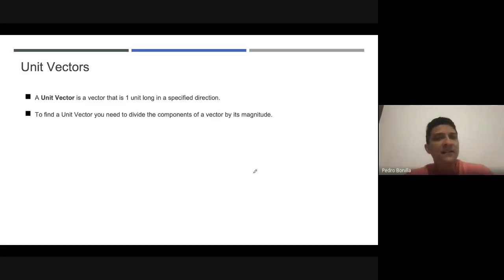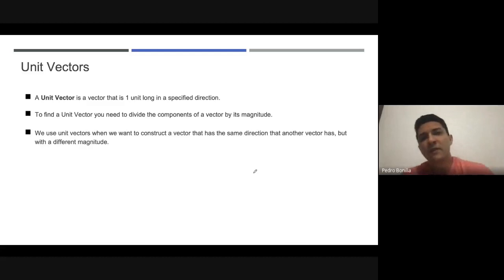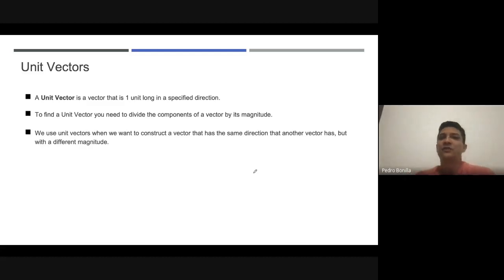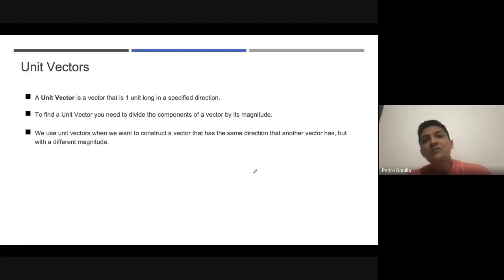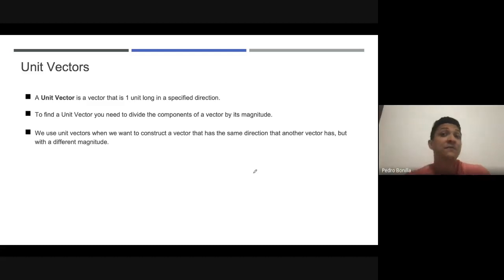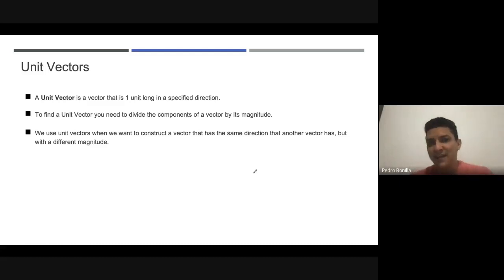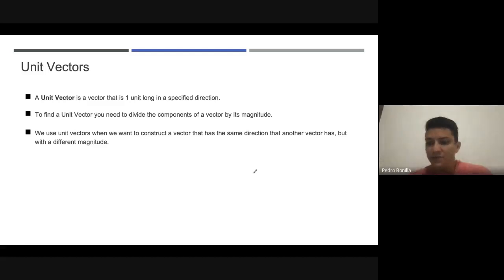That is basically the procedure — it's really easy. The purpose of this procedure is to take out the magnitude of the reference vector. The idea is that we are going to use that to create another vector that has a different magnitude but follows the same direction as the reference vector.